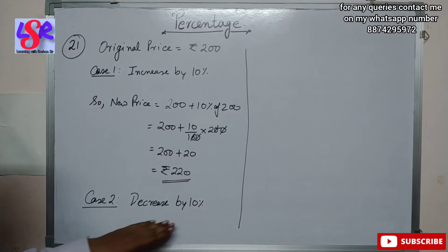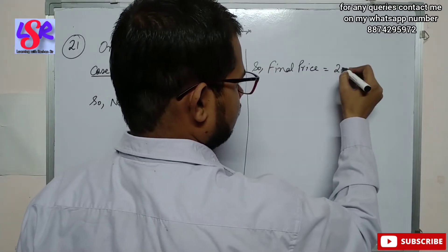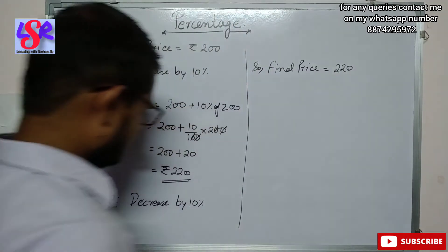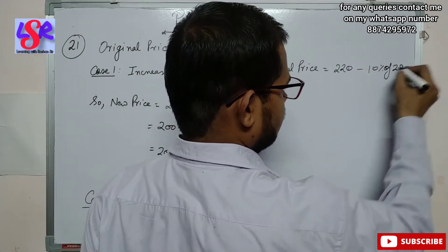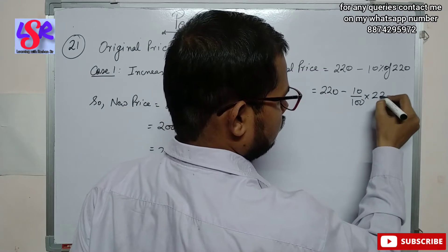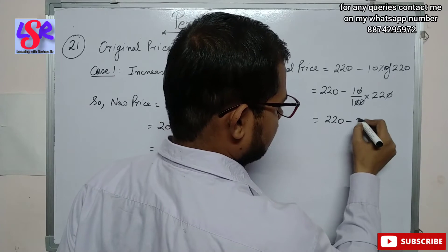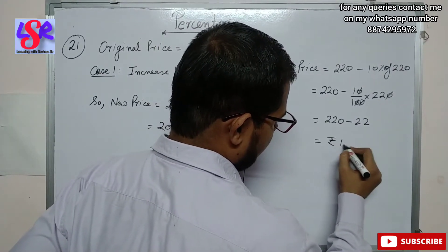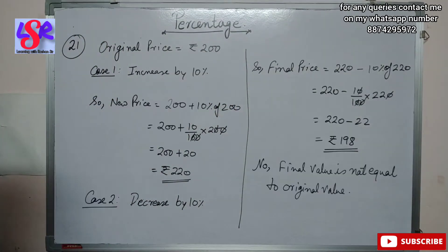After decreasing the price by 10 percent, the final price we will be getting is 220 minus 10 percent of 220. This will be 220 minus 10 upon 100 into 220. The zeros cancel out and we will be having 220 minus 22, and this equals to rupees 198. The final value is not the same as the original one.